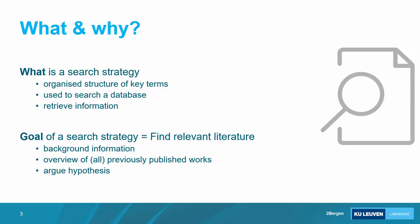The goal of having a search strategy is to find relevant literature. It can be to find background information on your topic, or to find an overview of previously published work — sometimes all previously published work, if you want to do a review — to get a really good idea of the current state of the science on your specific topic. You can also use it to argue your hypothesis as a researcher.